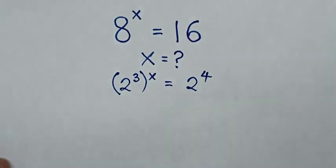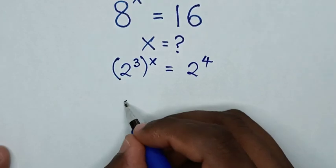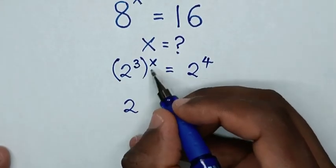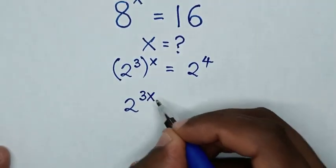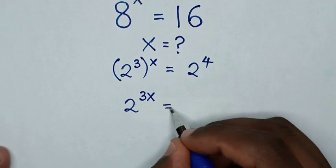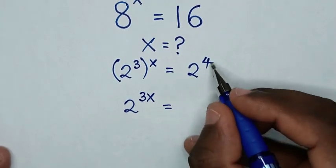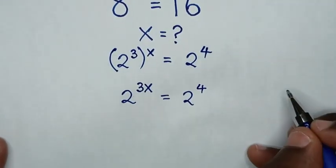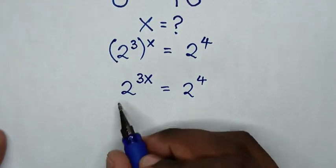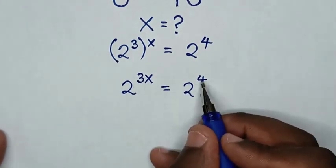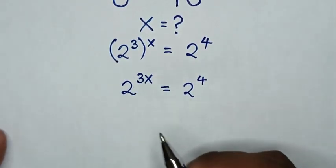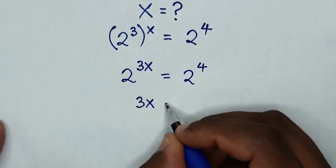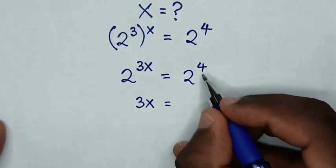In the next step, it will be 2 power 3x, is equal to 2 power 4. Because we have the same base of 2, we compare the powers. So here it will be 3x is equal to 4.